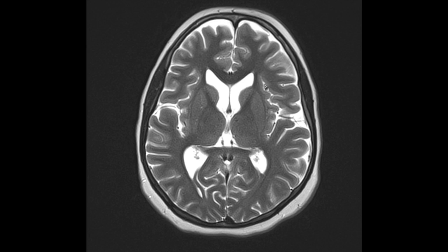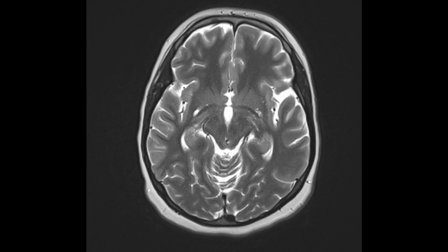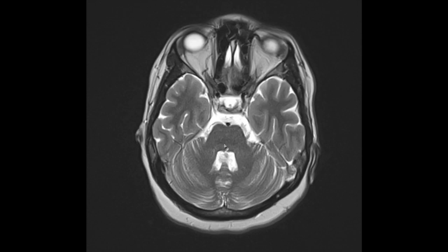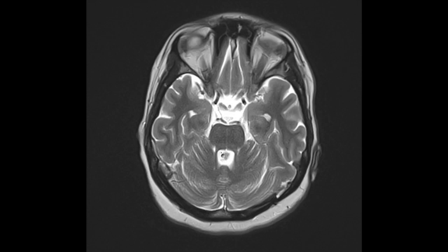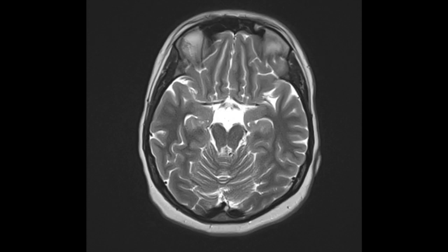Medial to the Sylvian fissure we have the insular cortex, which is considered its own entity in lobar anatomy. The lateral ventricles via the foramen of Monroe form the third ventricle, and then coming down you end up with the fourth ventricle via the cerebral aqueduct.